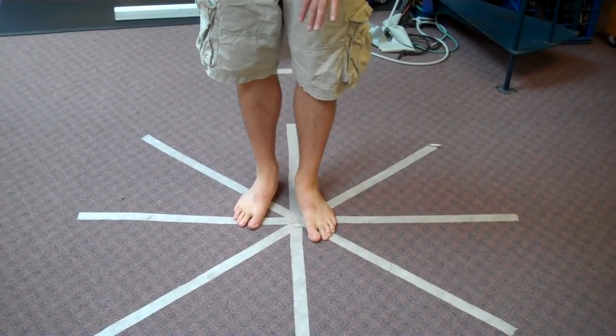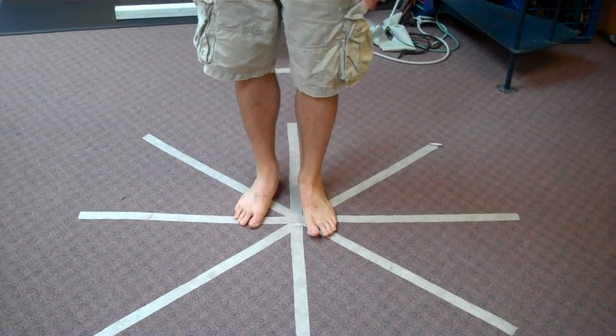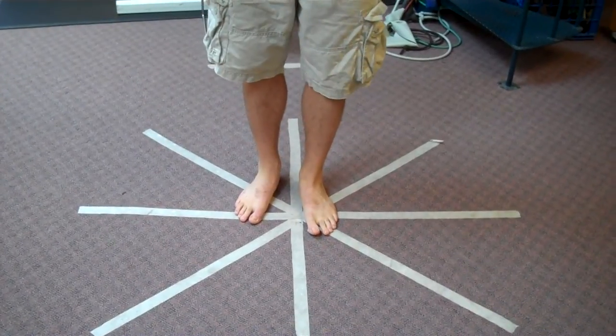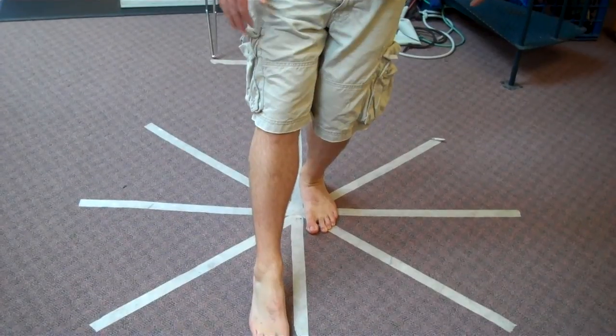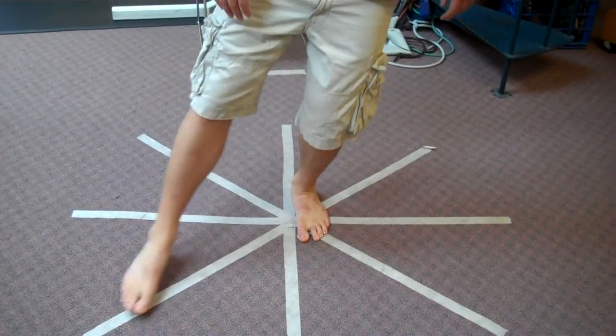So clocks are performed by having the affected leg just off the center of a star. You don't need a star at home, you can use your imagination. Stepping the toe forward of the unaffected leg at different angles.